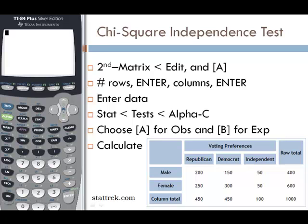We're going to do the chi-square independence test on our TI-84 calculator. We're going to use data from StatTrek.com. The data that StatTrek gives us is voting preferences based on gender.